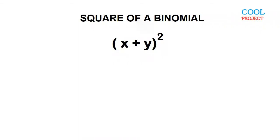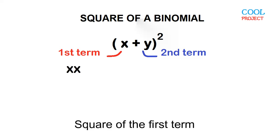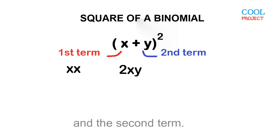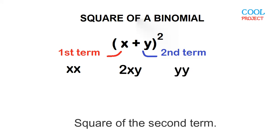Square of a binomial. The square of a binomial consists of the square of the first term, twice the product of the first term and the second term, and the square of the second term.